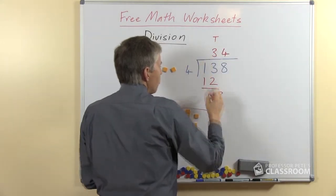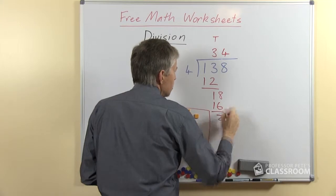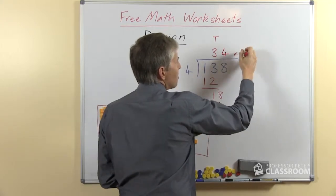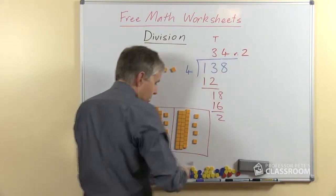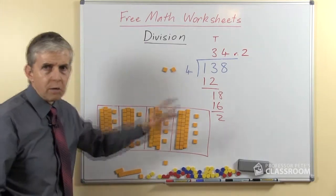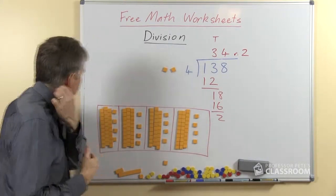So everybody gets 4, we write that up here. 4 ones. 4 fours are 16. Of course there are 2 left, and there are different ways of writing the remainder. I usually write a lowercase R with a dot. You might write REM or capital R or whatever.